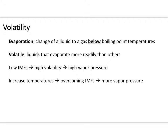High-volatility substances have very low intermolecular forces, which allows them to go from liquid to gas phase easily, resulting in higher vapor pressure. For example, perfume placed on your neck — the body heat increases the temperature of the liquid, helping overcome the intermolecular forces and making it easier for it to enter the gaseous state.